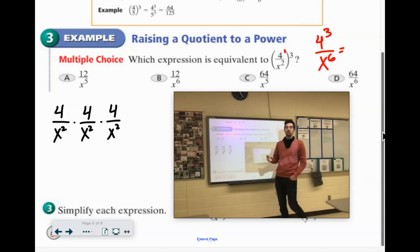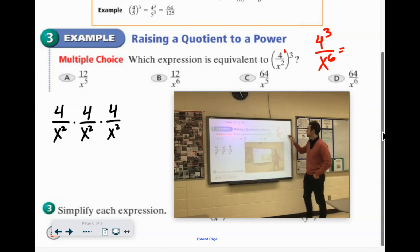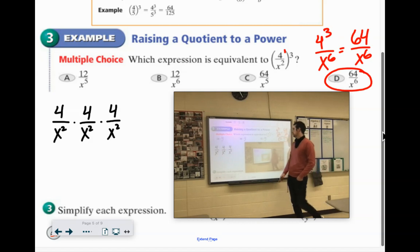Last thing is do 4 to the third power. 4 times 4 is 16, times one more 4 would give you 64 over x to the sixth, which would be that final answer there.